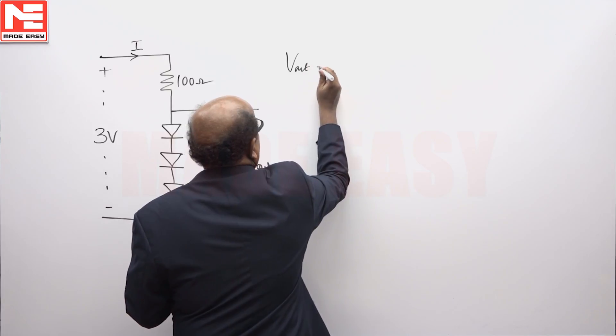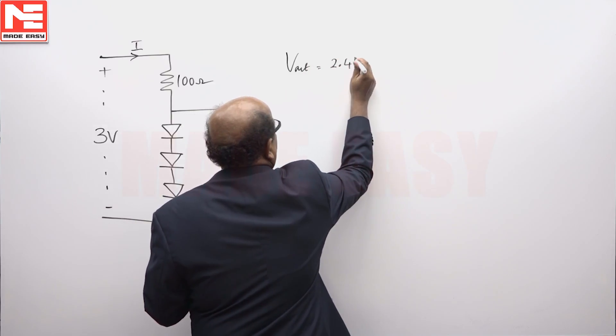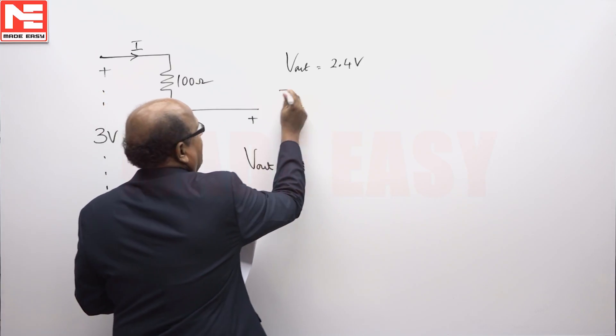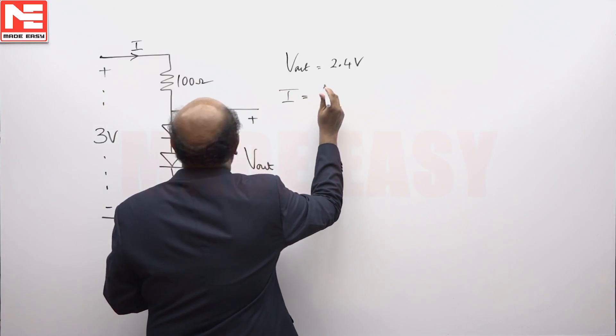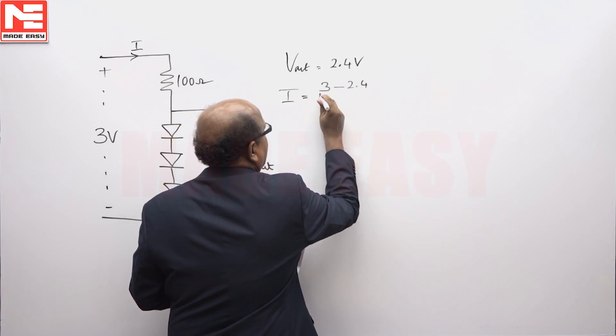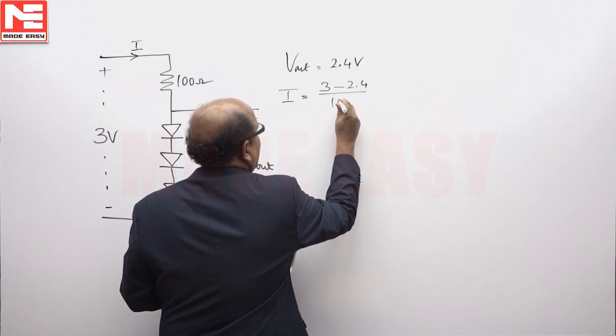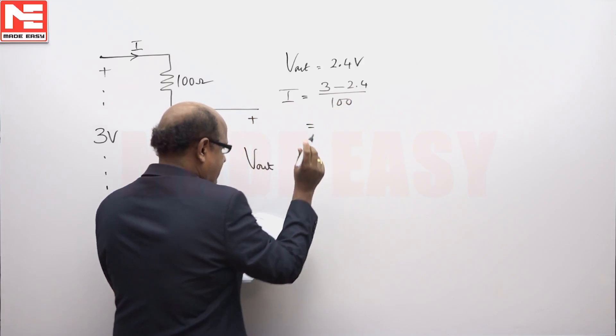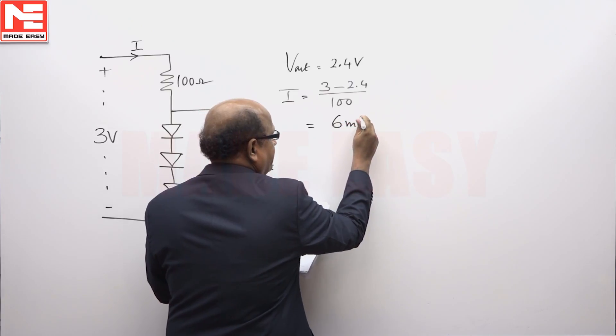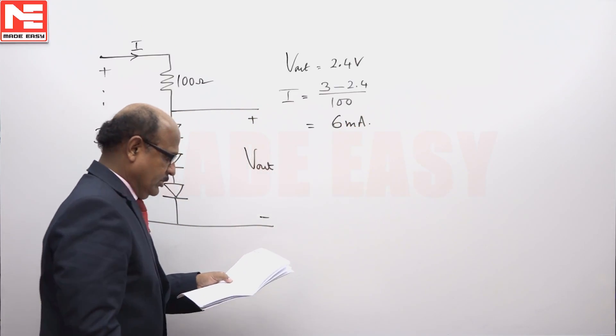Output voltage will be equal to 2.4 volts. We can now calculate the current I, which equals input voltage 3 volts minus output voltage 2.4 volts, divided by the resistance value 100 ohms. This value will be equal to 6 milliamperes.